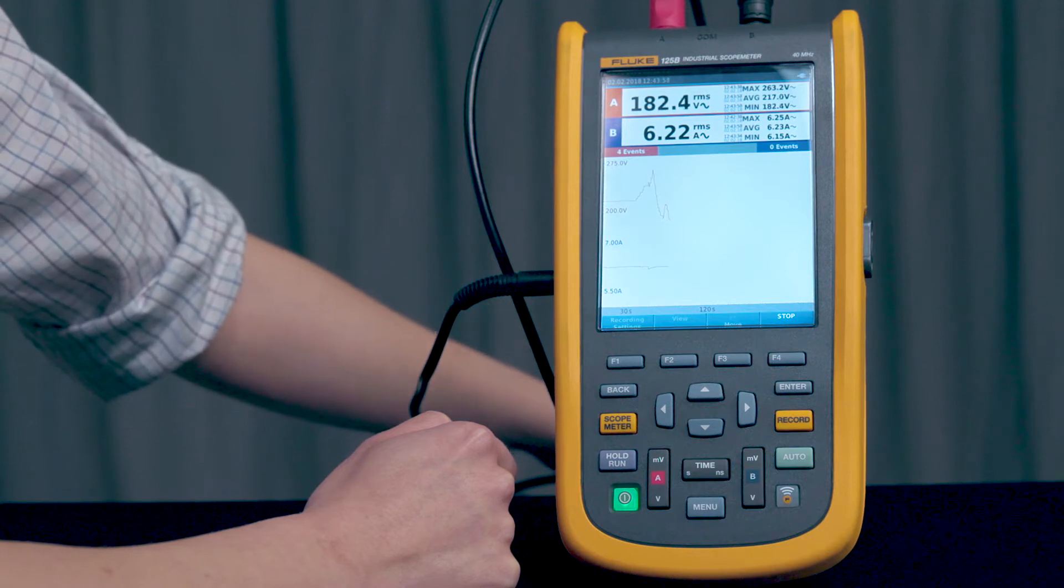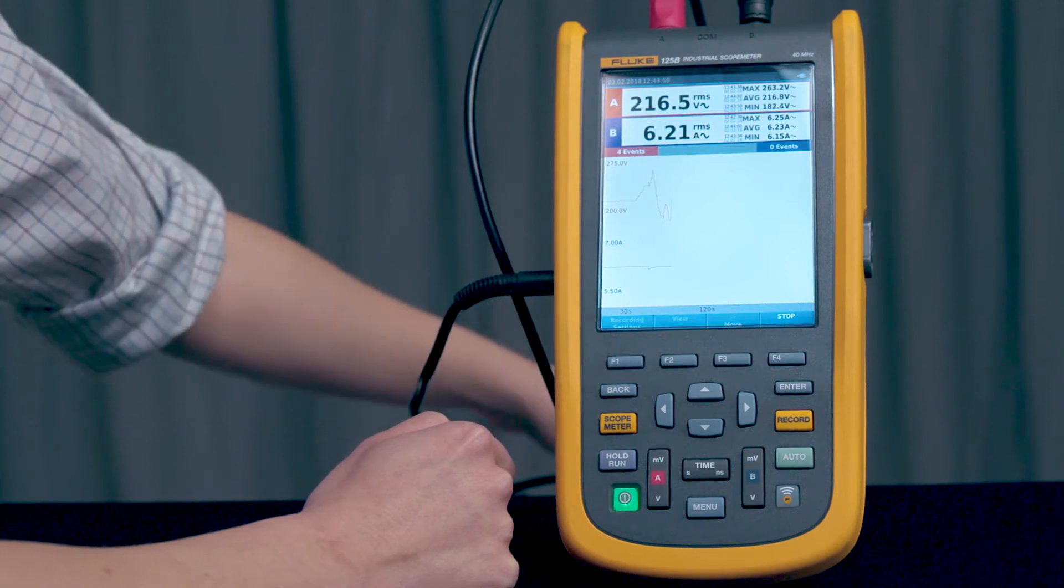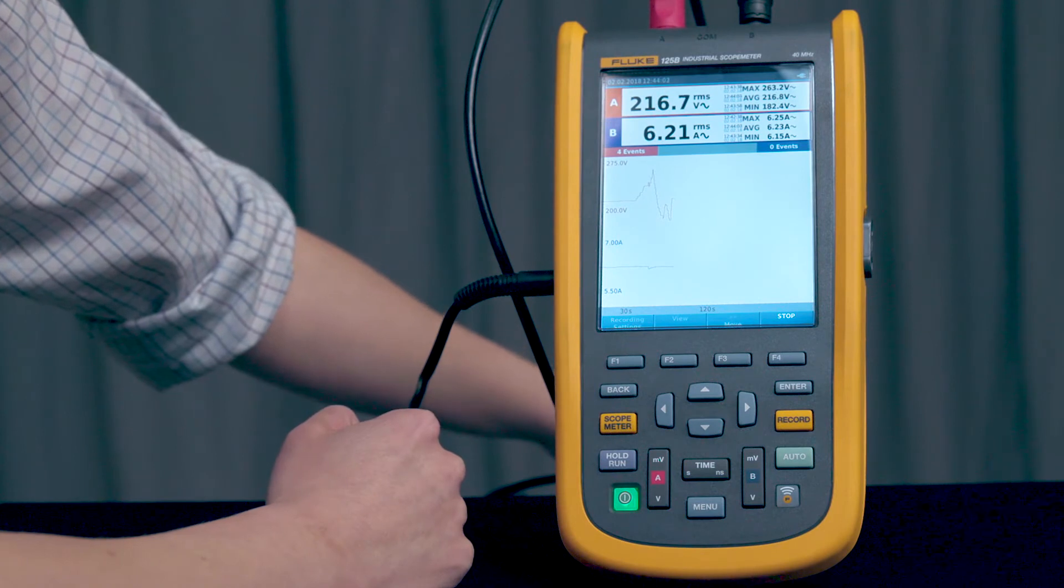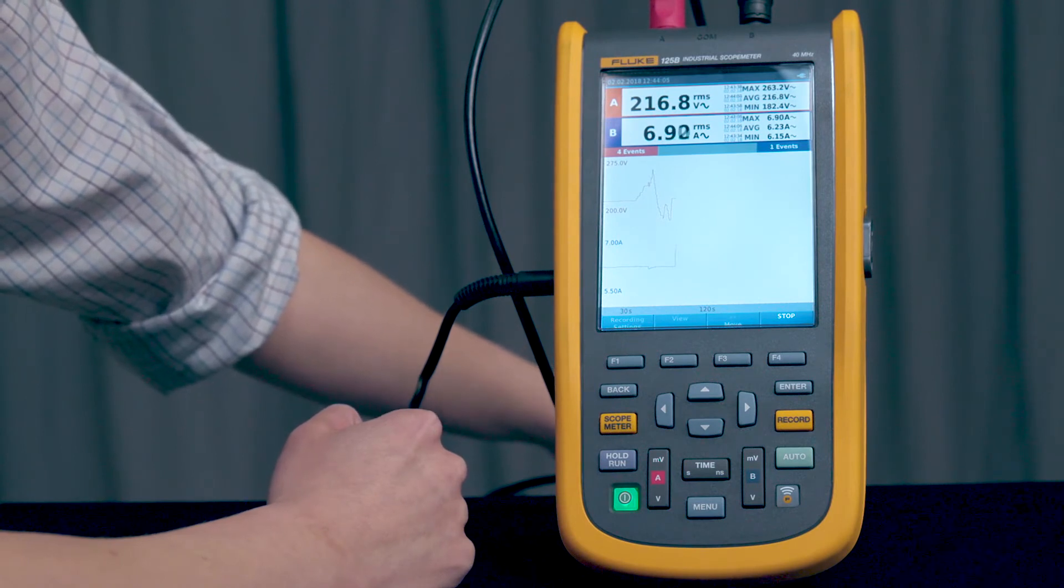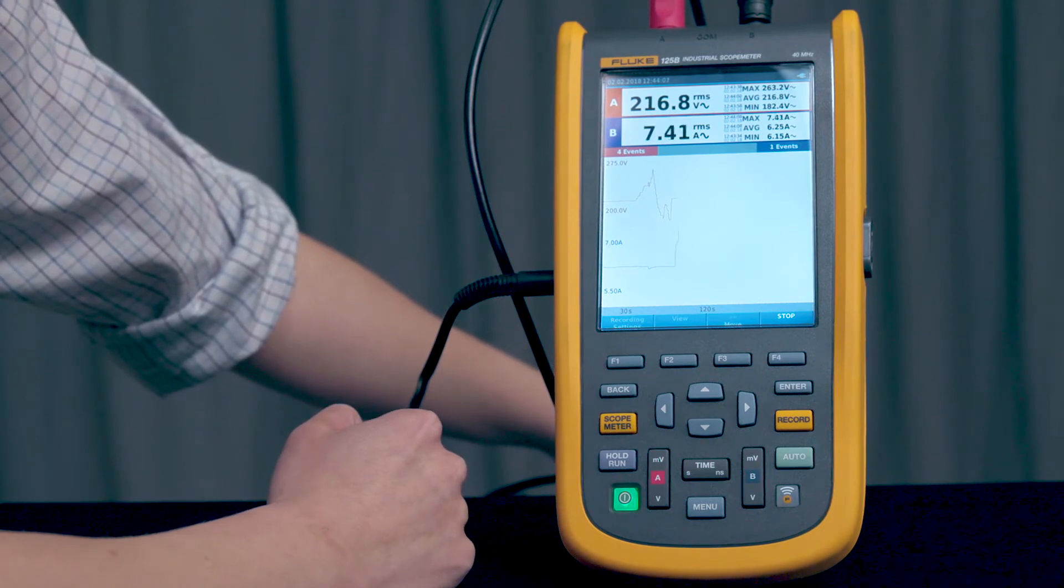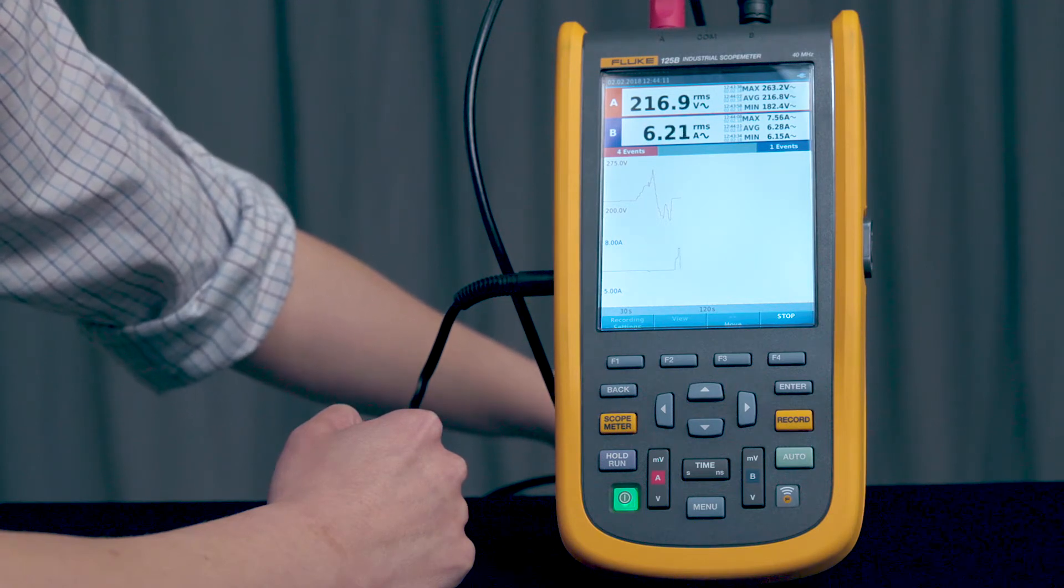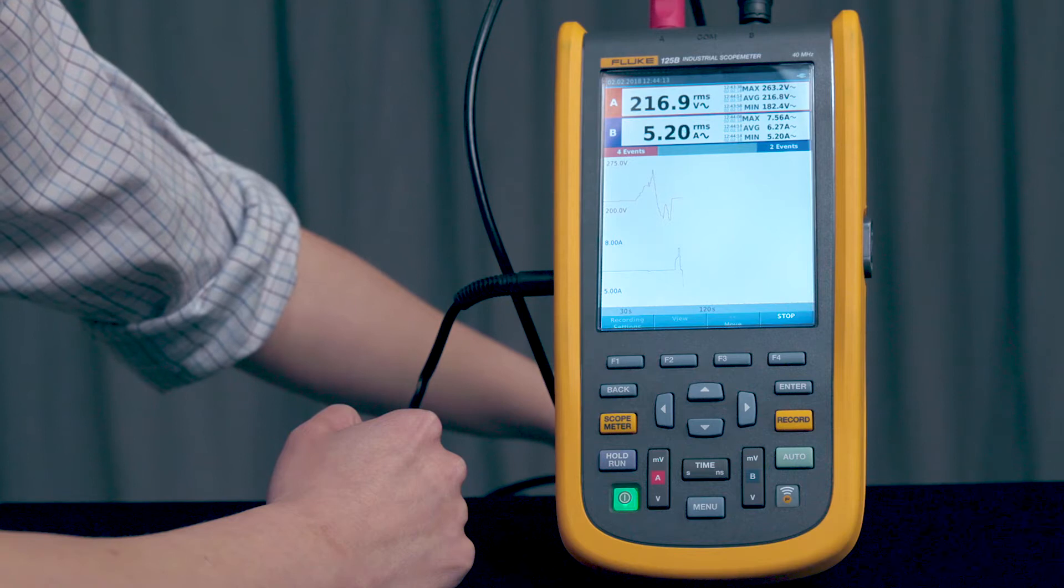There you go. And we can do the same for the current. So over here, we'll increase the current. You'll hear a beep when it went beyond the threshold, the upper threshold. And you'll hear a beep when it goes below the lower threshold. There you go.